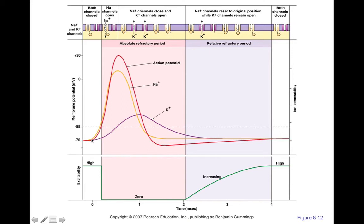The other lines on the graph — the yellow line and the purple line — show the permeability of ions. Permeability means the ability for these ions to flow. During the rising phase, sodium has an increase in permeability, followed by a decrease after the sodium channels close. Right around the peak of the action potential, voltage-gated potassium channels open, making potassium more permeable. Once they start closing, potassium permeability decreases until we reach resting permeability, helping bring voltage back to resting.